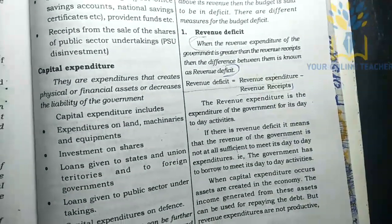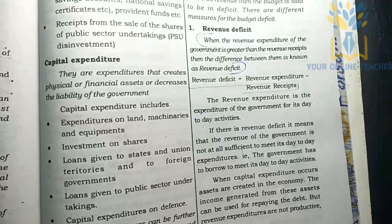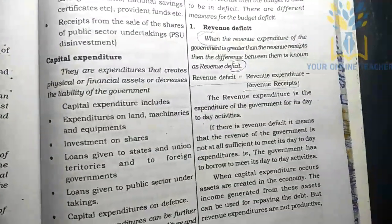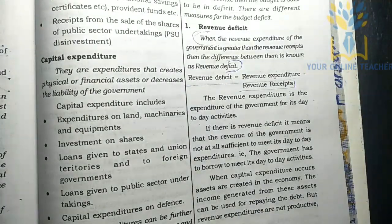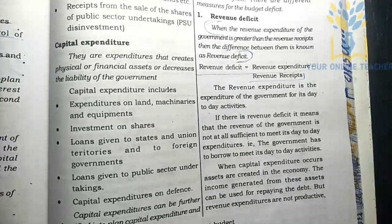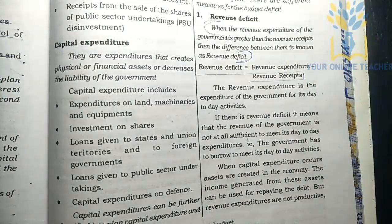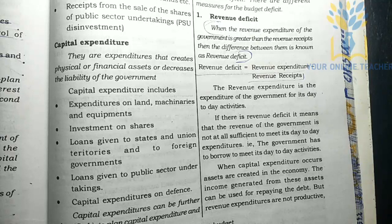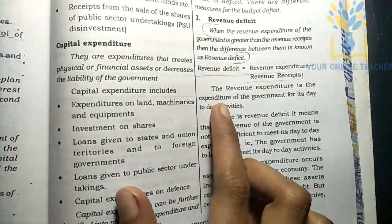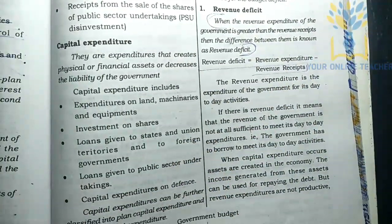When the government spends over and above its revenue, the budget is said to be a deficit. Revenue deficit occurs when the revenue expenditure of the government is greater than the revenue received. Revenue deficit equals revenue expenditure minus revenue receipts.